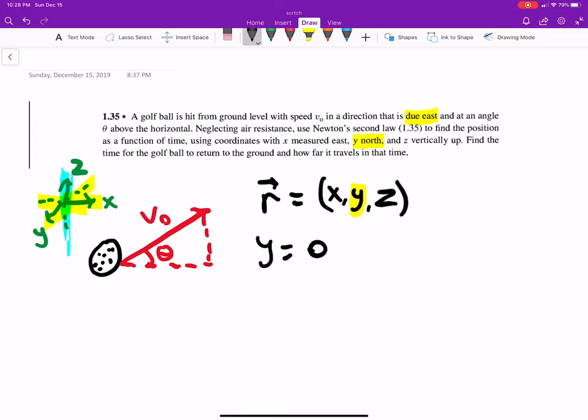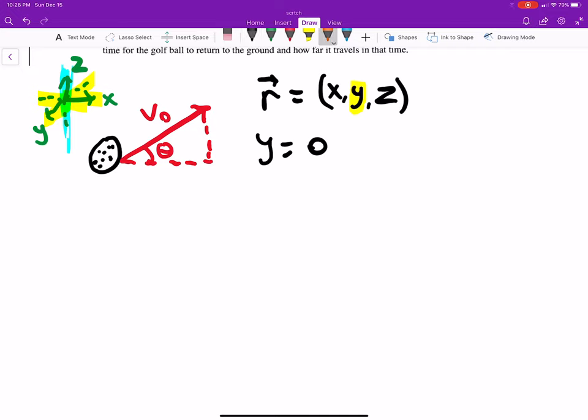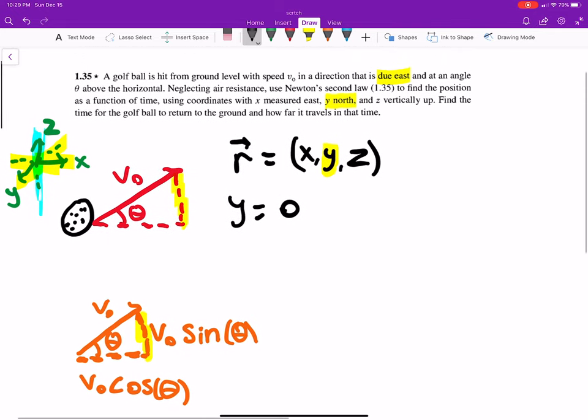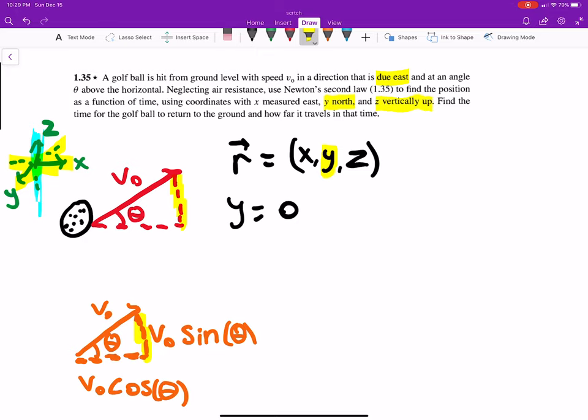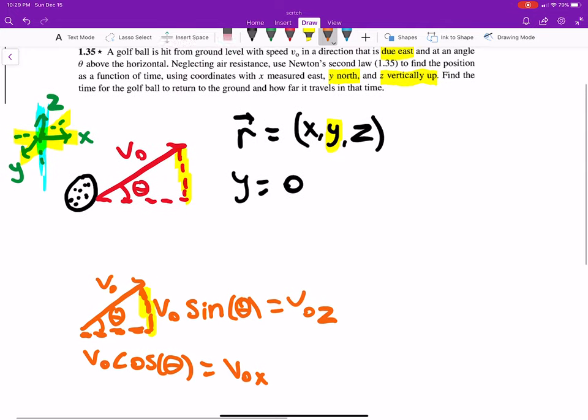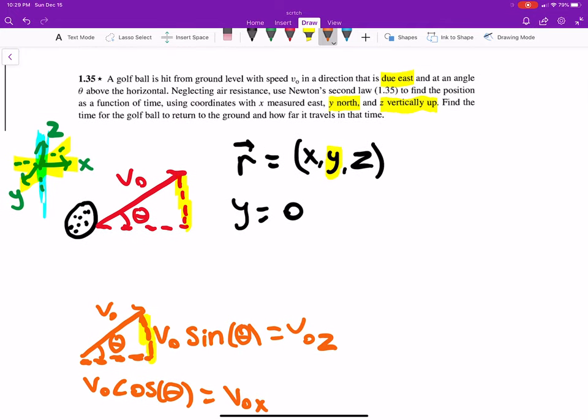Well, that was pretty easy. Can we get x? Let's look at this triangle a little bit more. So we have v naught, theta, and this section here is v naught sine of theta, and this section here is v naught cosine theta. Now what does v naught sine theta represent? That's this portion of our triangle and that's telling you vertically how high up you are. The letter we're using to represent how vertical it is is z, so this is equal to v naught in the z direction, and this is v naught in the x direction where x is east.